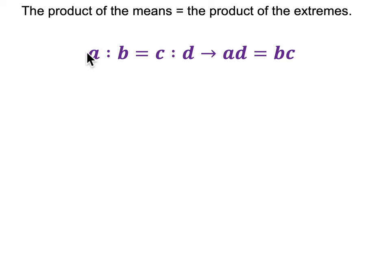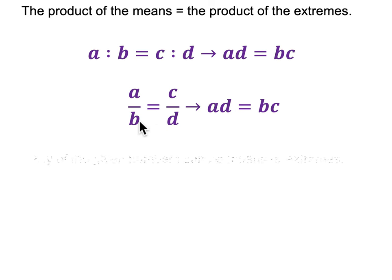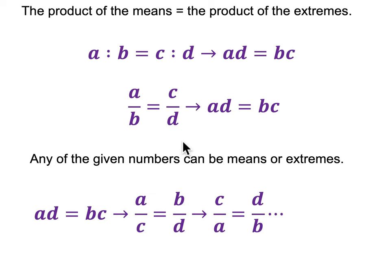To summarize: if you have a ratio a to b equals c to d, then a times d equals b times c — these cross products are equal. What's also really cool is that you can arrange them in any way you want. Through division, you can rearrange the terms so that any of them are either means or extremes. You can get a and d as the means and c and b as the extremes — the opposite of before — just by dividing both sides by a and then by b.